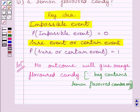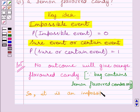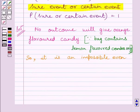So it is an impossible event. Therefore, the probability of getting an orange candy is equal to 0. We know the probability of an impossible event is equal to 0.